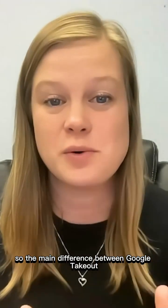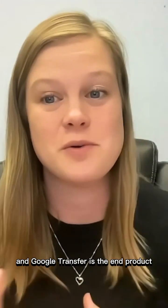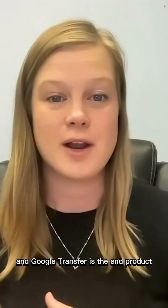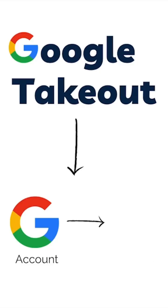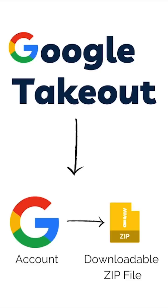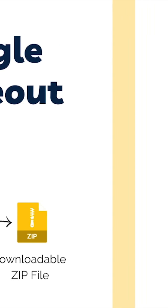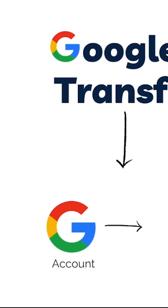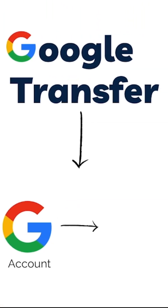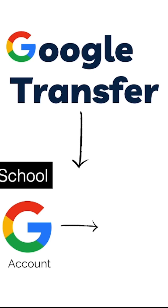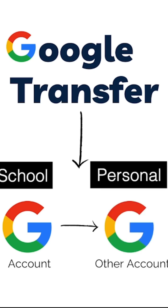The main difference between Google Takeout and Google Transfer is the end product. If you decide to use Google Takeout, it's going to download all the data from your Google account and put it into one downloadable zip file. Whereas Google Transfer is going to take your original Google account and transfer it over to another second account.